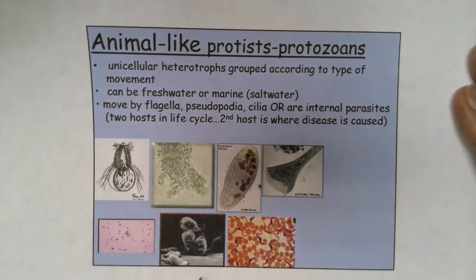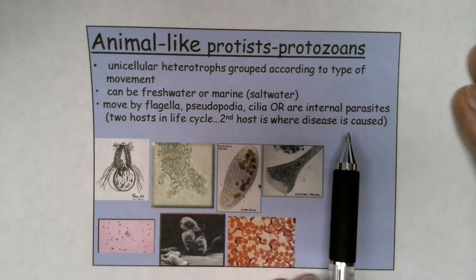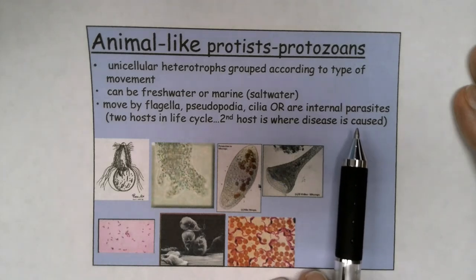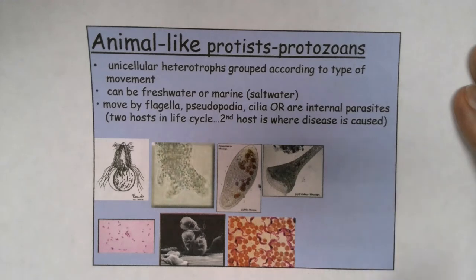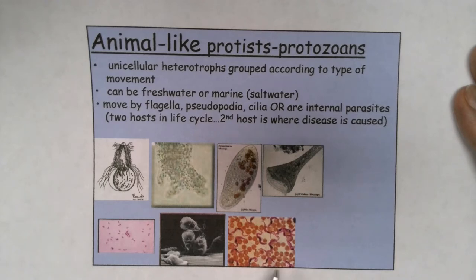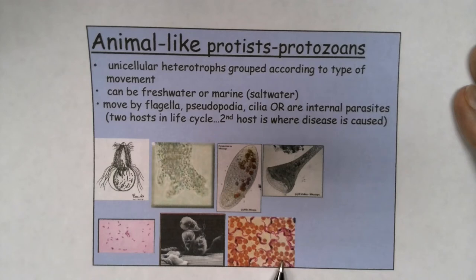Giardia has flagella. Animal-like protists can also be internal parasites. If they are internal parasites, they're heterotrophic and they typically have two hosts in their life cycle — the first is an intermediate host that they do not harm, and the second is where the disease is caused. For example, all those little red dots are red blood cells, and the protist — the longer, wiggly, squiggly-looking things with a dark nucleus — is called plasmodium. That's the protist in a blood smear of somebody who has contracted malaria.